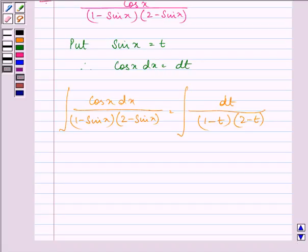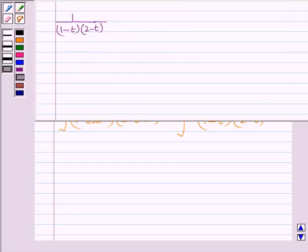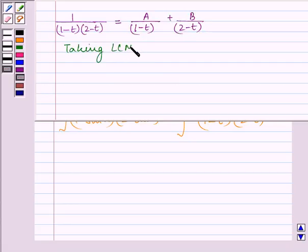Let us solve it by partial fraction method separately. This function can be written as a upon 1 minus t plus b upon 2 minus t.